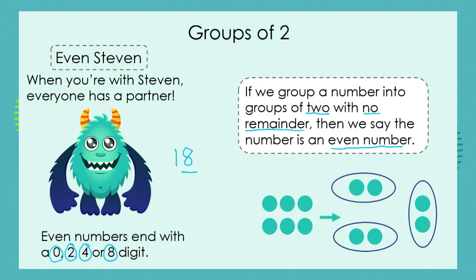So let's look at our example. Even Stephen has six dots and he wants to put them into groups of two. Here is one group, there is his next group, and there is his third group. Can you see, grade ones, that each group has two dots and there are no dots left over? There are no dots left over, which means there are no remainders. And we know that this means it is an even number because each group got the same amount.